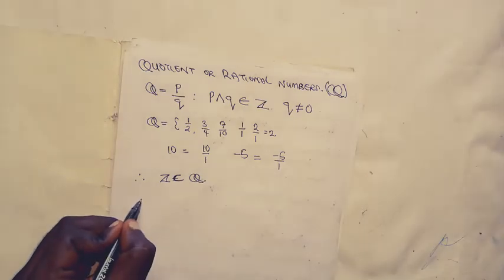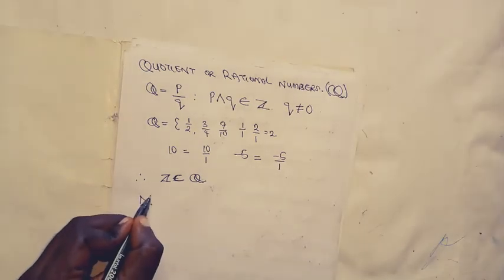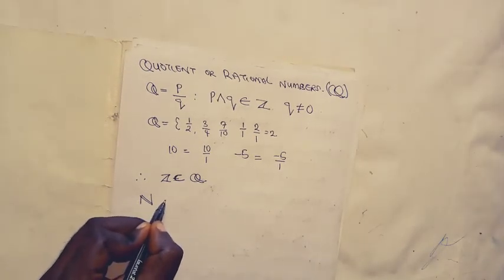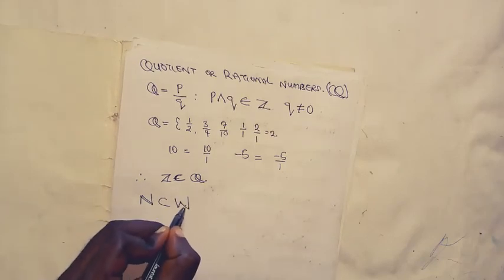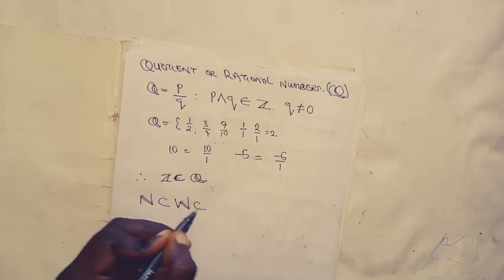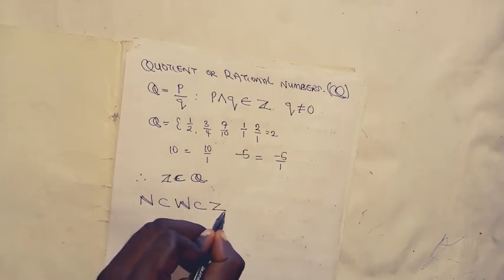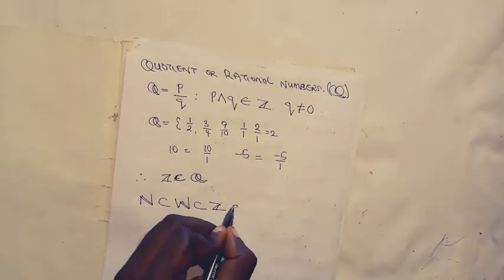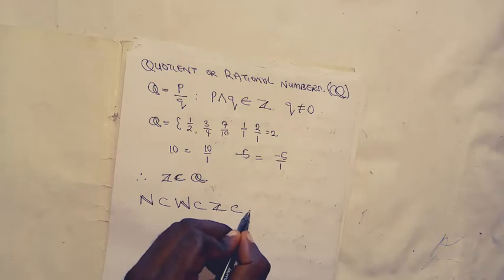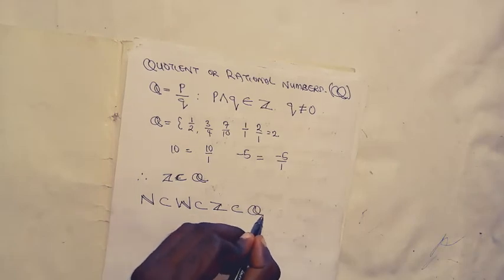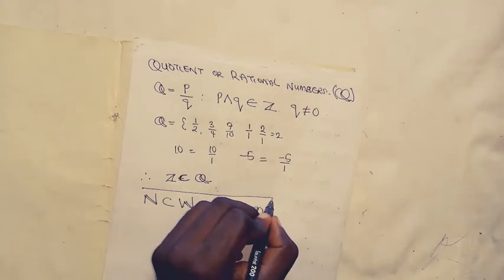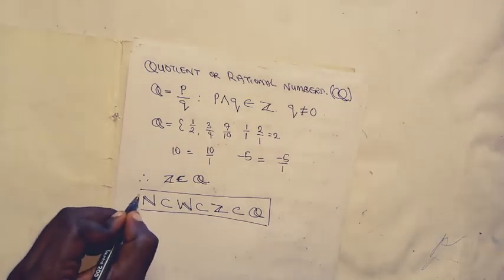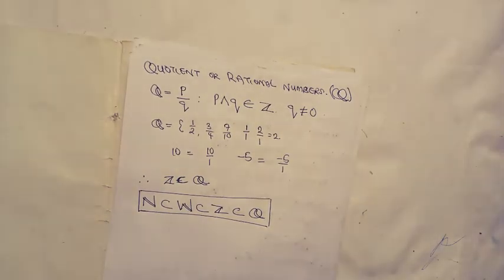Every integer number can be written as a rational number. So it suffices to say that natural numbers are a subset of whole numbers, which are subsets of integers, and are also subsets of quotients. Please note this — it is very important to understand this relationship.